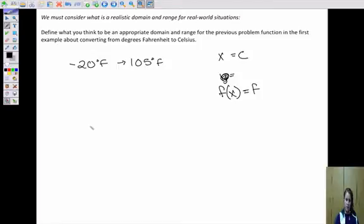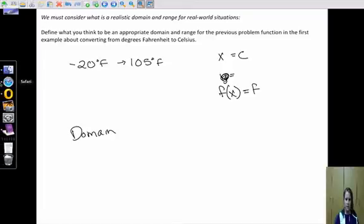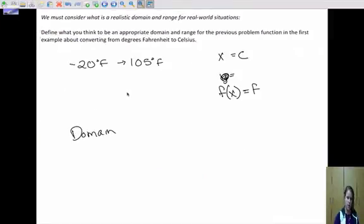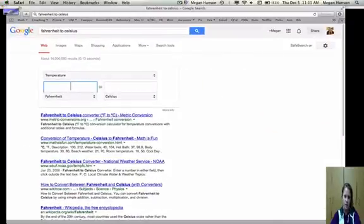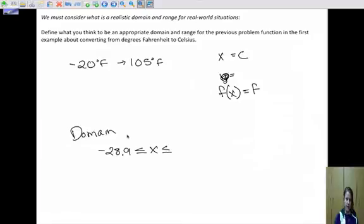So our domain would be, we'd have to look that up. So Fahrenheit, we want to go from negative 20, that would be negative 28.88. So our domain would be negative 28.9 to be safe, is going to be less than or equal to X, which is less than or equal to, what's 105 in Celsius, it would be 40 degrees. So 40.5 is our maximum Celsius.